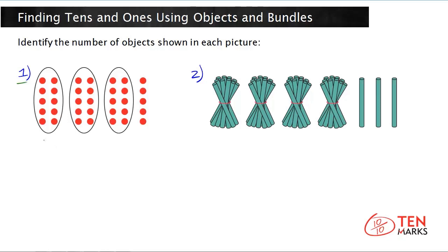As you can see, there are three groups, and each of these groups contains ten red counters. That means that each group represents one ten. And since there are three groups representing one ten, that means you have three tens in all.